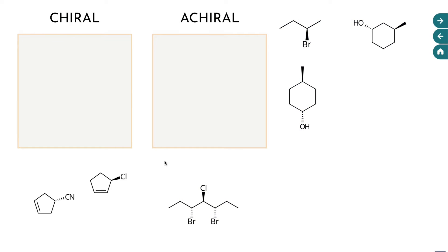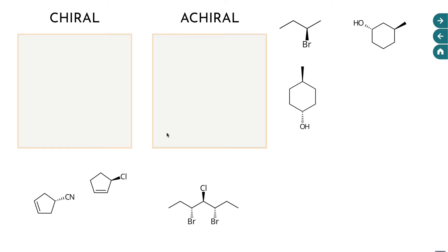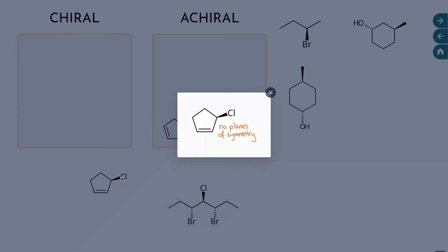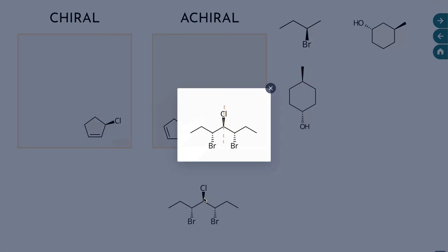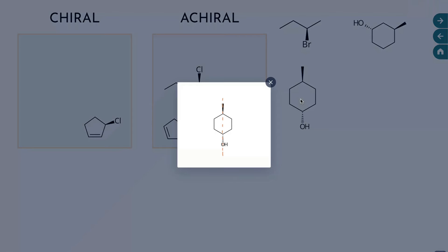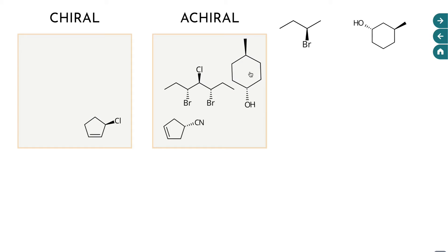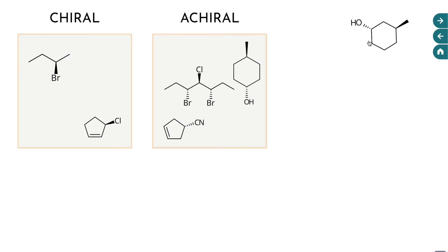This first molecule is achiral. It has a plane of symmetry that cuts right through the center of the molecule through that double bond and through the CN group. This second molecule is chiral. There is no way that we can cut this molecule into equal halves and there's no center of symmetry. So this must be chiral. This next one has a plane of symmetry going right through the middle. That's pretty easy to see. And the next one, this six-membered ring, also has a plane of symmetry going right through the middle. Finally, these last two up at the top are both chiral. There's no planes or centers of symmetry on either of these molecules.